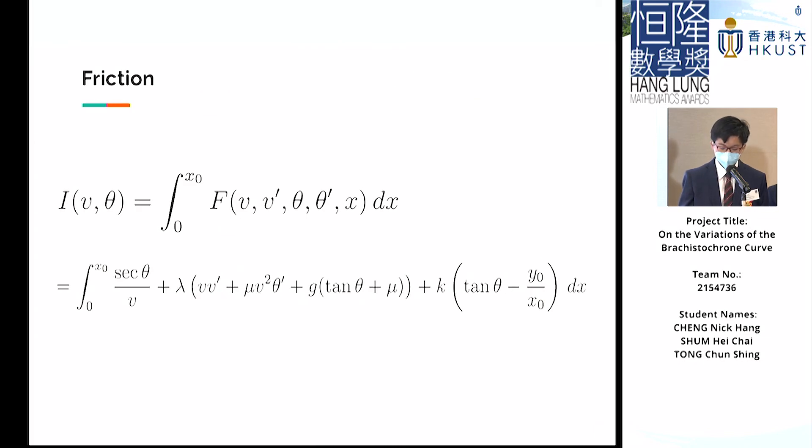On the other hand, expressing tan(θ) as dy/dx gives us another constraint of an object's motion. Since both v and θ and their derivatives with respect to x are variables, we need to apply the Euler-Lagrange equation in tandem with Lagrange multipliers. The integral looks like this, with the expression following λ being the first constraint, and the one following k, the second constraint.